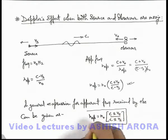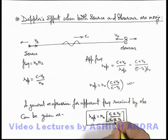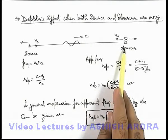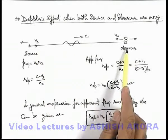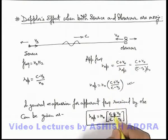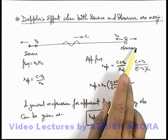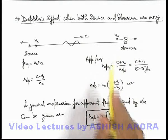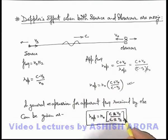In this situation we'll choose positive or negative sign depending upon the velocity of observer and source. If observer is moving toward the source, it will receive higher frequency, so in numerator we choose positive sign. If observer is moving away, it'll receive a lesser frequency, so we choose negative sign in numerator.